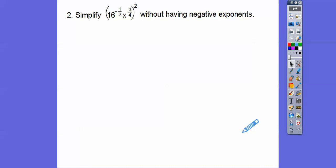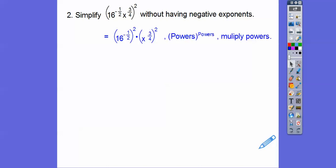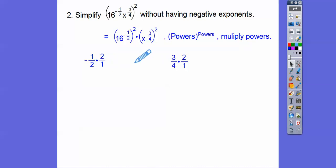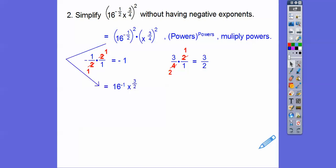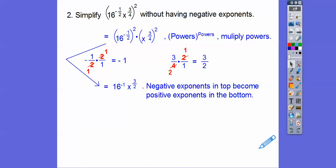Now, simplify without having negative exponents. We have 16 to the negative 1 half power times x to the 3 fourths power, and all of that is to the second power. We're going to put everything to the second power. Powers raised to powers — we multiply those powers. So negative 1 half times 2, and 3 fourths times 2. We can cross-cancel: the 2 cancels, leaving negative 1; and 3 fourths times 2 gives 3 halves. So we rewrite that as 16 to the negative 1 times x to the 3 halves. Since the negative exponent in the numerator gets flipped to the denominator, 16 to the 1 is just 16. So our answer is x to the 3 halves over 16.